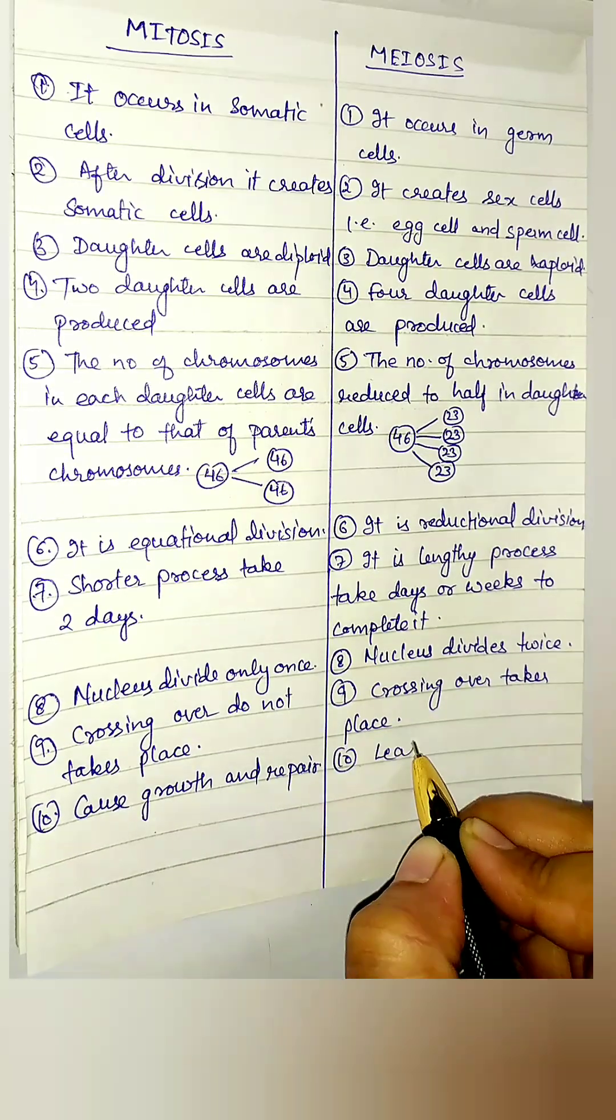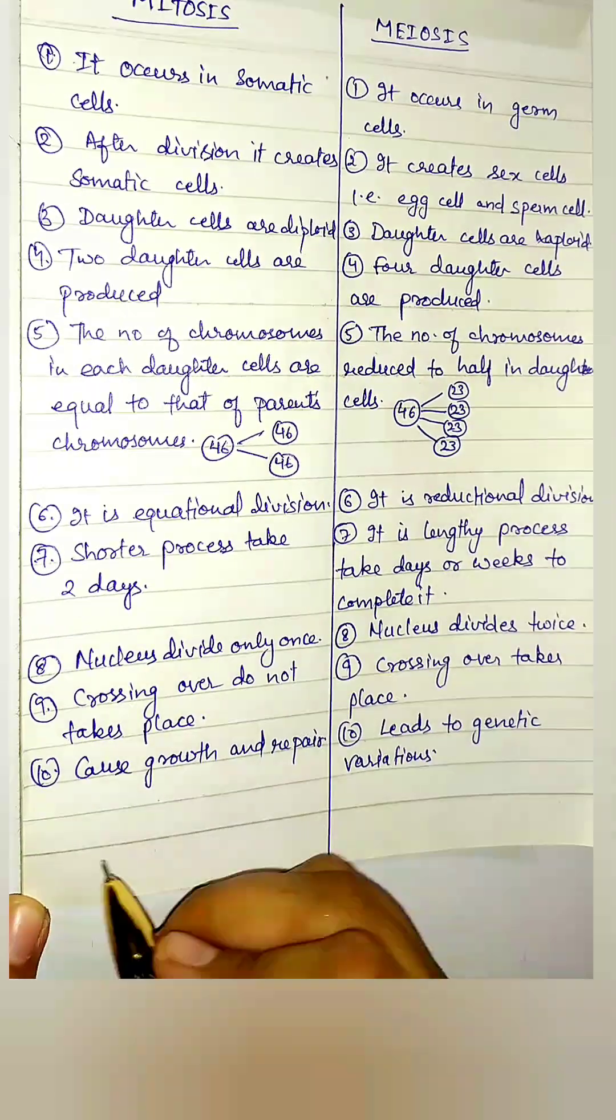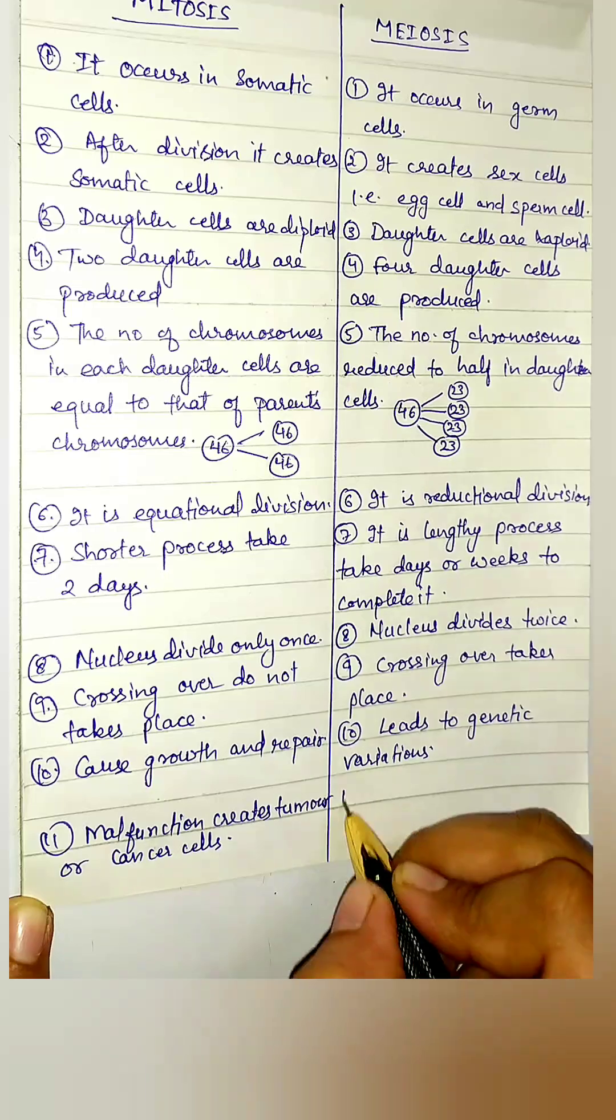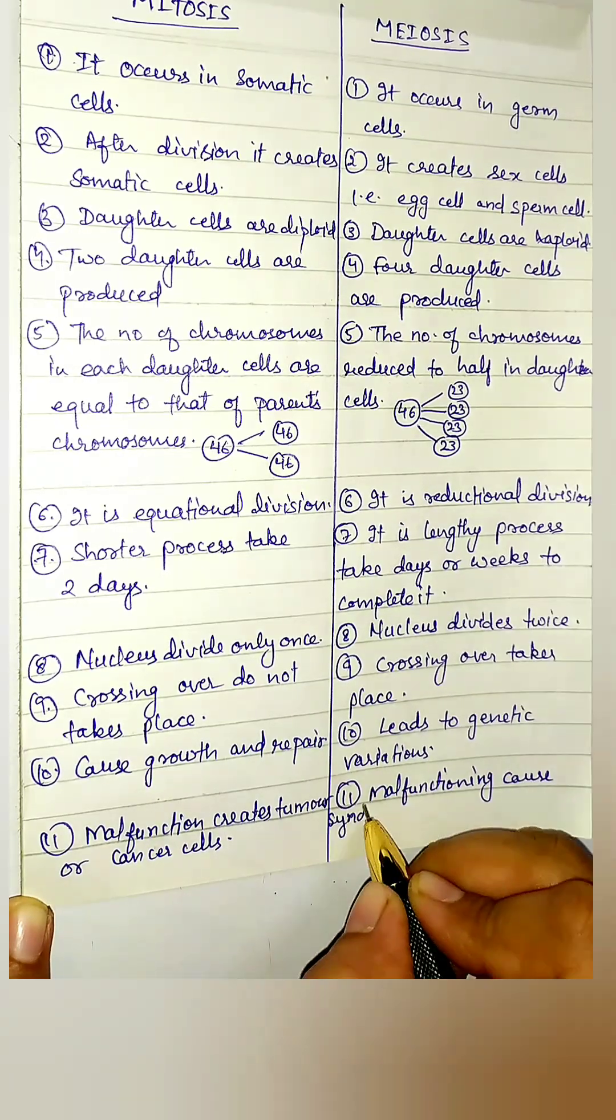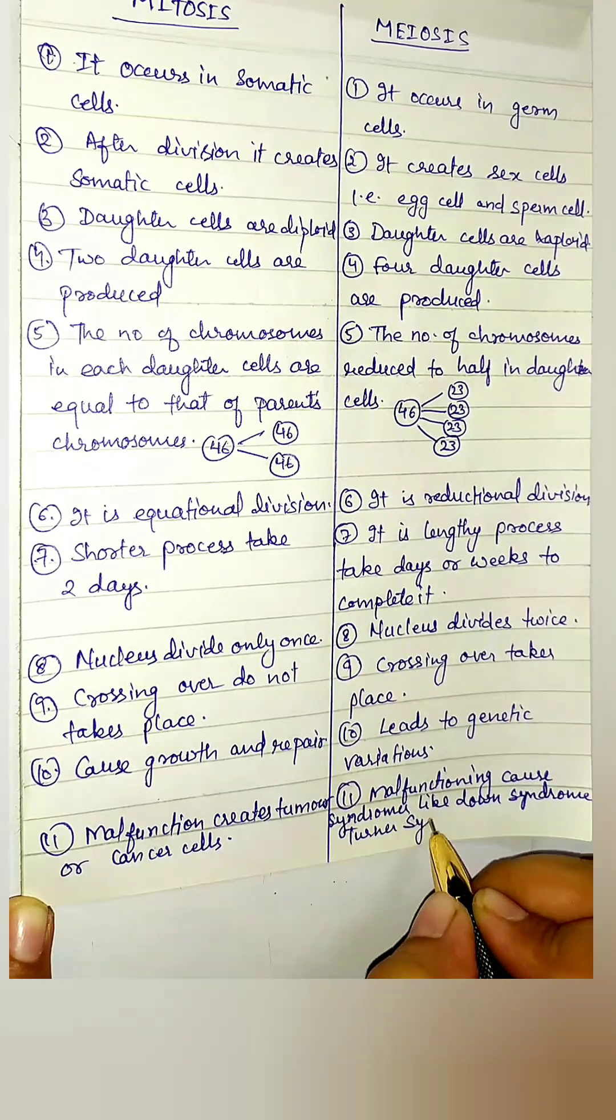Mitosis causes growth and repair and meiosis leads to genetic variation. Malfunctioning in mitosis creates tumor and cancer cells. Malfunctioning in meiosis causes syndromes like Down syndrome and Turner syndrome.